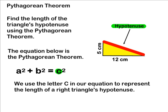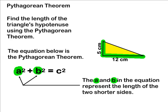When you are asked to figure out the length of a triangle's hypotenuse, you are solving for the letter c in the equation that represents the Pythagorean Theorem. The a and the b in our equation represent the length of the two shorter sides of our right triangle.